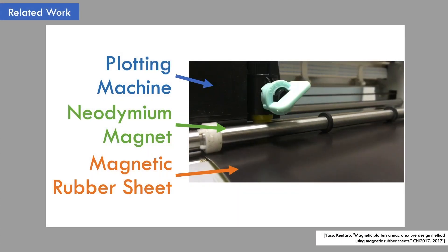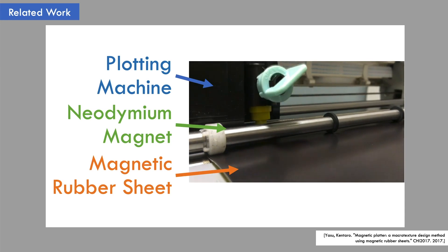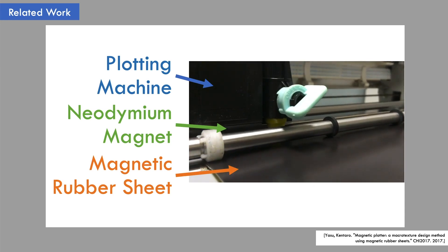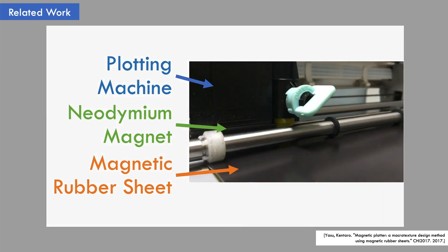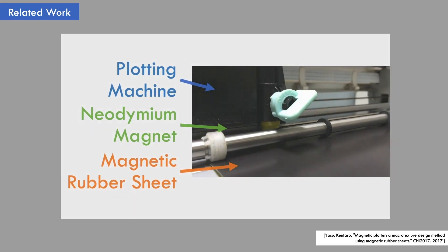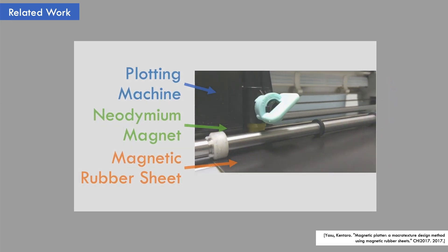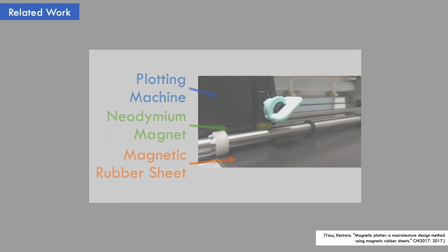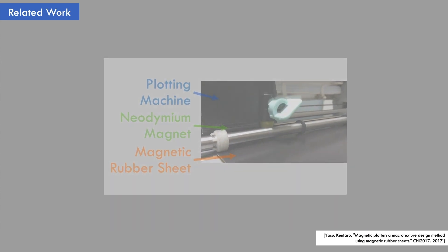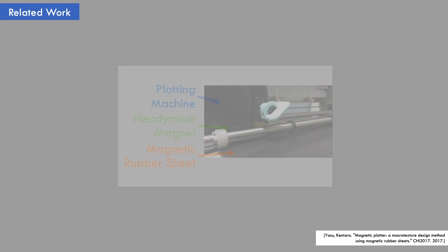In contrast, the magnetic plotting machine can magnetize specific patterns with precision. However, it takes much time to magnetize complex patterns like a checkered one. Therefore, there are limitations to the rapid prototyping of haptic interactions that use complex geometric magnetic patterns.